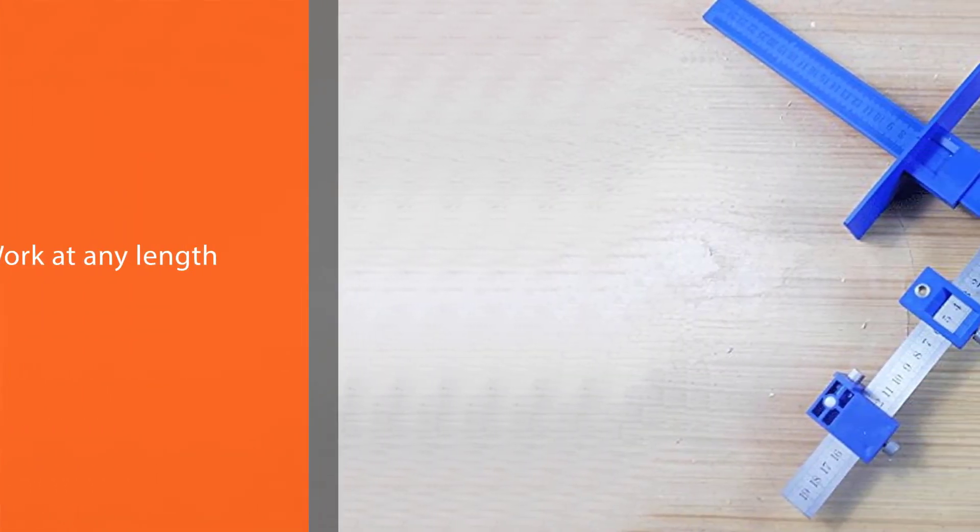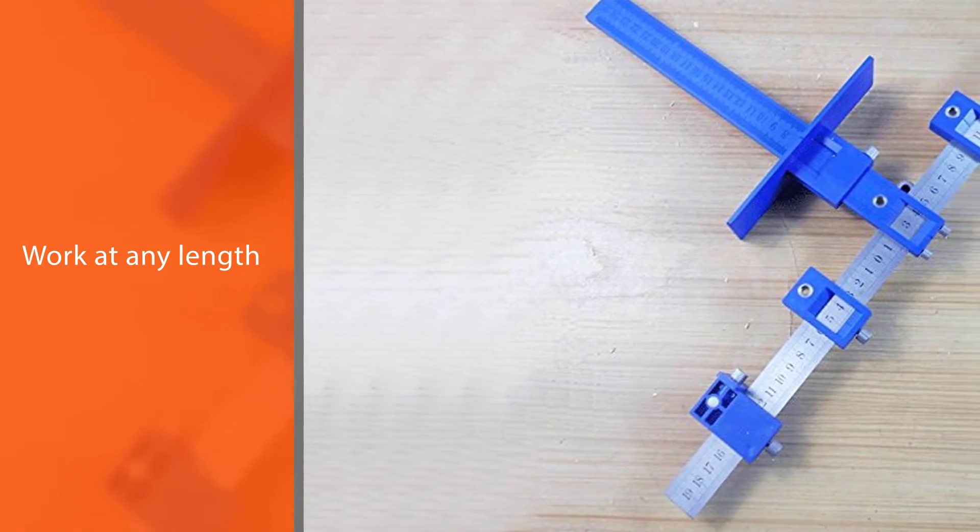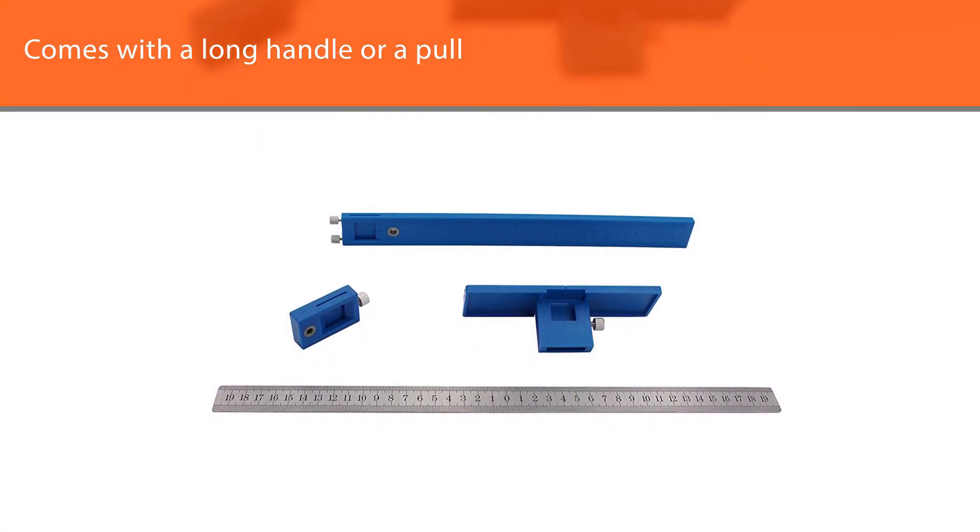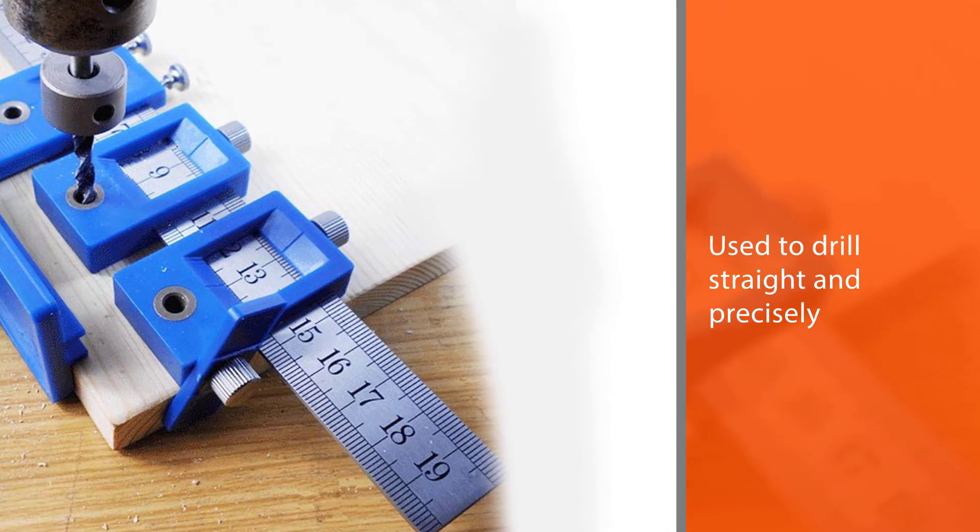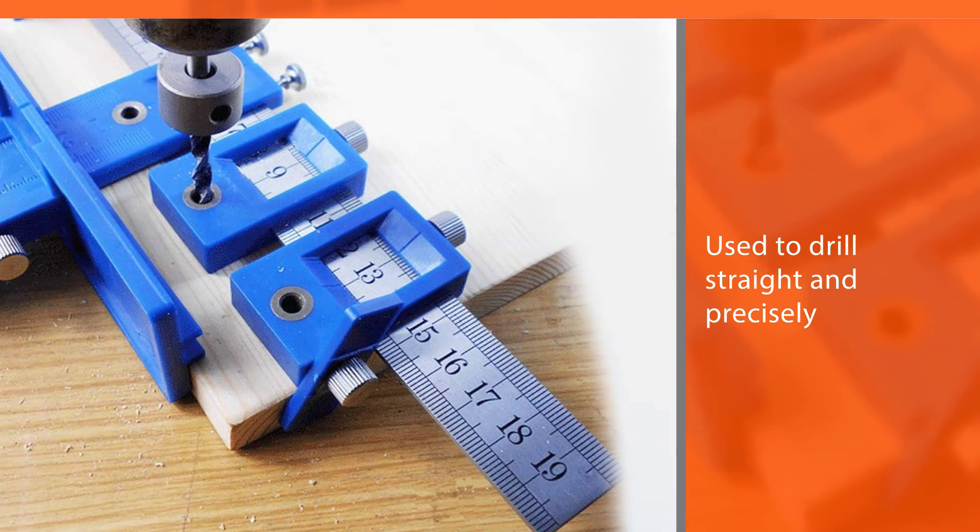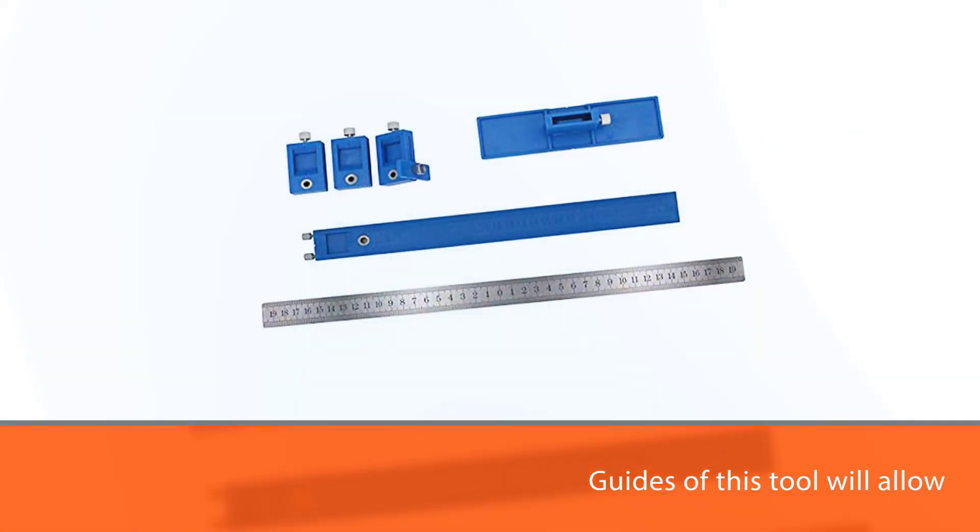It is certainly much better than measuring and drilling each cabinet and hoping they are aligned perfectly. It is easy to use and you can set this one up to work at any length, whether it's a long handle or a pull. You don't have to change your measurement tools or templates. The key to installing perfectly aligned hardware is to drill straight and precisely. The drill guides of this tool will allow you to do that and eliminate any sort of drilling mistake.